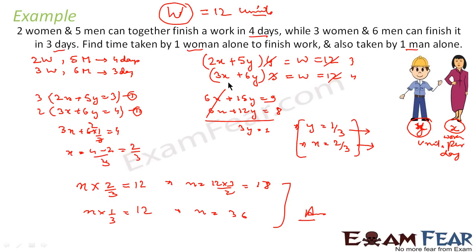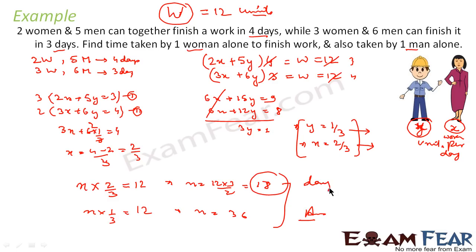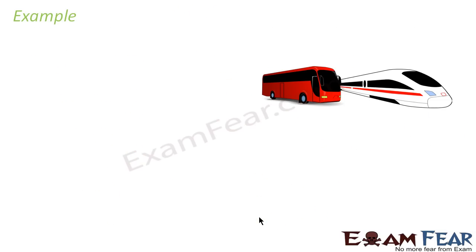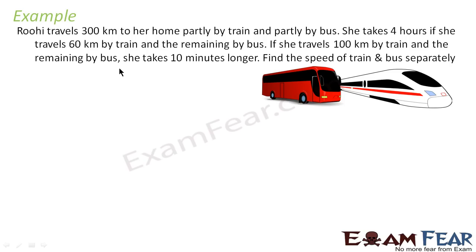Everything is in units — work per day in units. So x = 2/3 units per day and y = 1/3 units per day. Multiplying: n × (2/3) = 12 gives n = 18 days, and n × (1/3) = 12 gives n = 36 days.